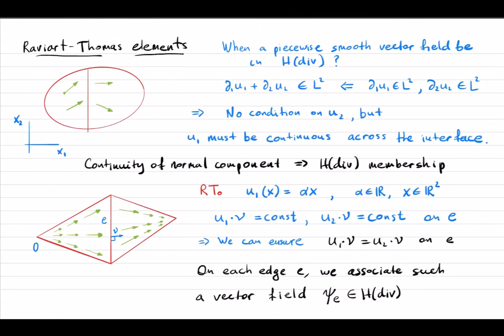Let's look at the possibility of defining such a Fortin operator. We have not yet defined our finite element spaces. For H(div) and L2, we require finite element spaces that are subspaces of H(div). Given a triangulation with polynomial vector fields, we want to find a condition under which a piecewise polynomial vector field lies inside H(div).